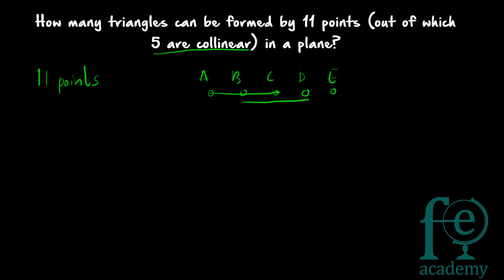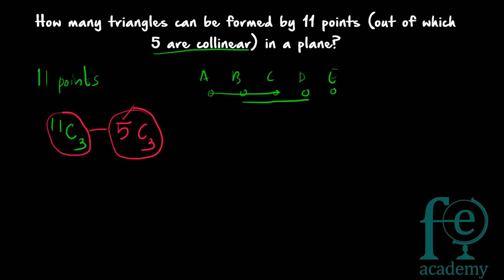So how many triangles can be formed? You select 3 points from the total 11 points — that can be done in 11C3 ways. But if you select 3 points from the 5 collinear points you will not get a triangle, only a straight line. So you have to subtract 5C3 from 11C3. 5C3 is the number of ways to select 3 points from those 5 collinear points, so your answer is 11C3 − 5C3.